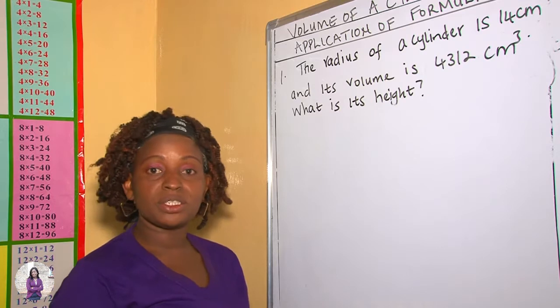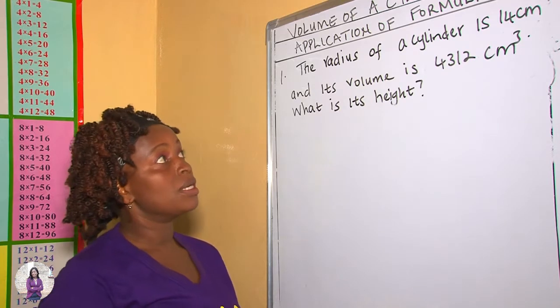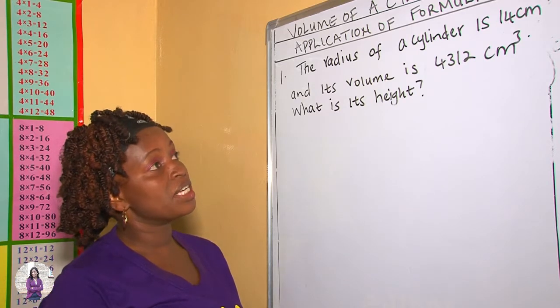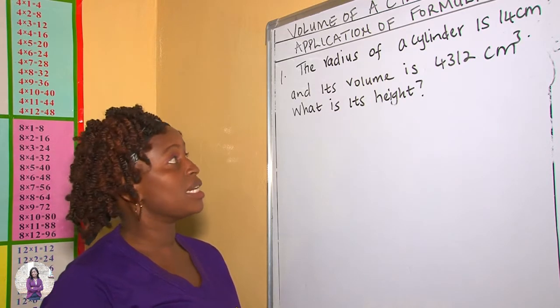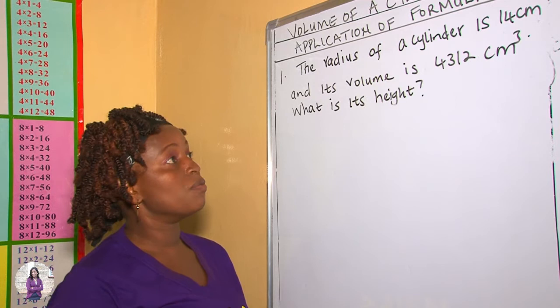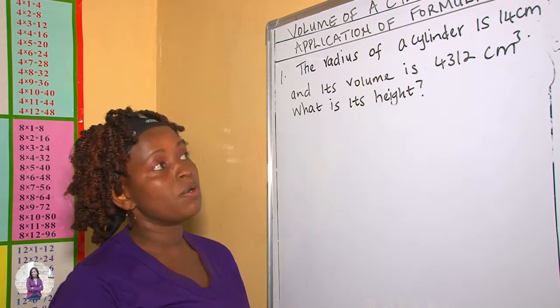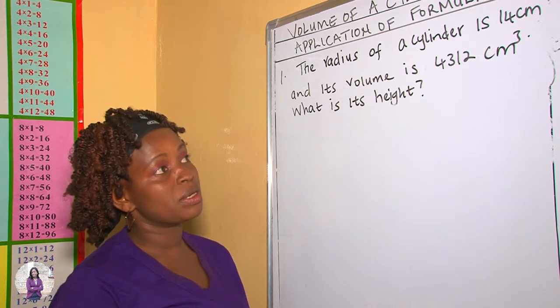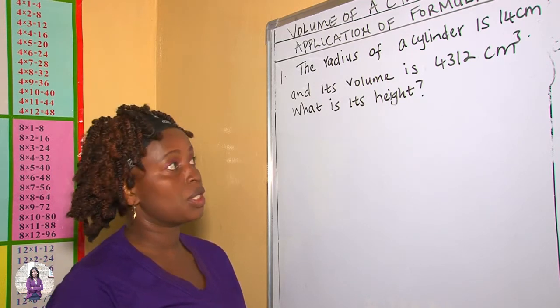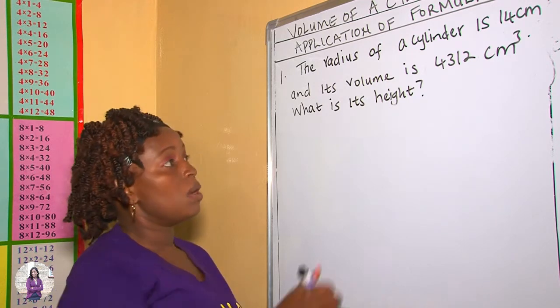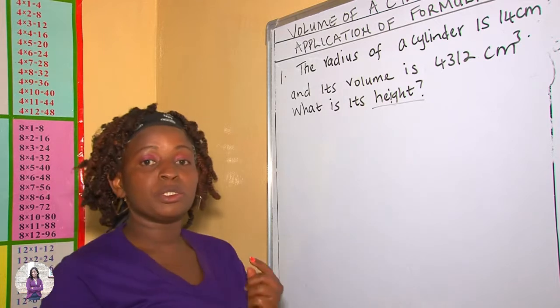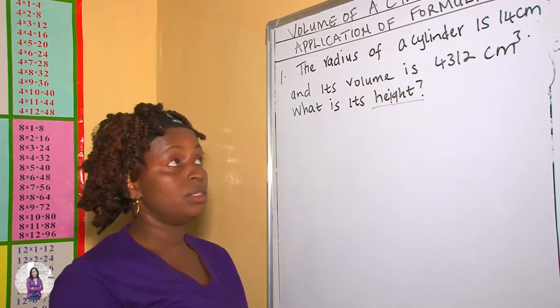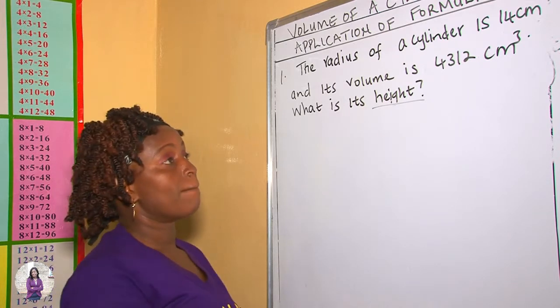In this question we are told that the radius of a cylinder is 14 centimeters and its volume is 4,312 centimeters cubed. What is the height? You are supposed to find the height of the cylinder.